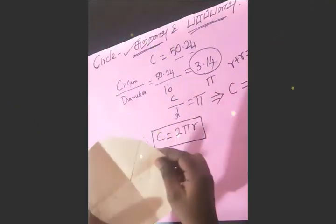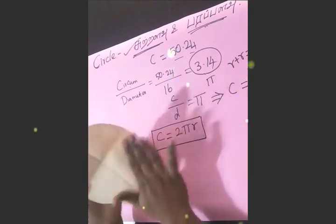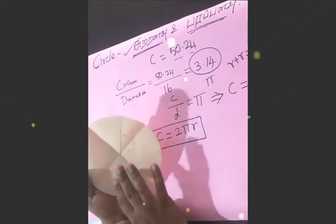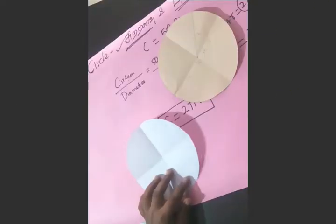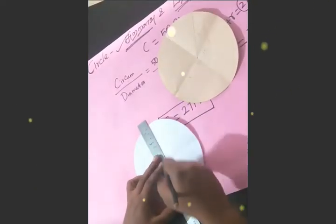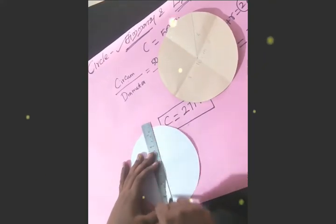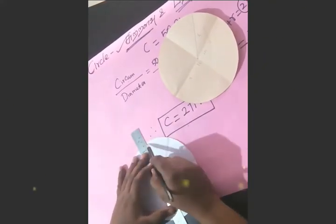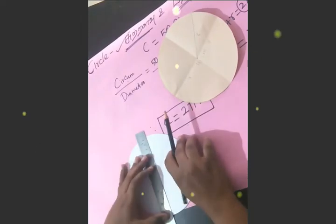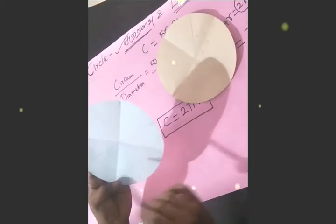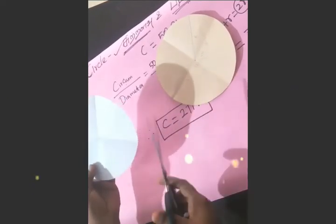Now, how do we find the area of a circle? We will explain the area of the circle. If you need to find the area, you normally find length and breadth. So we will cut the circle into small pieces and arrange them into a rectangle shape, then find the length and breadth.